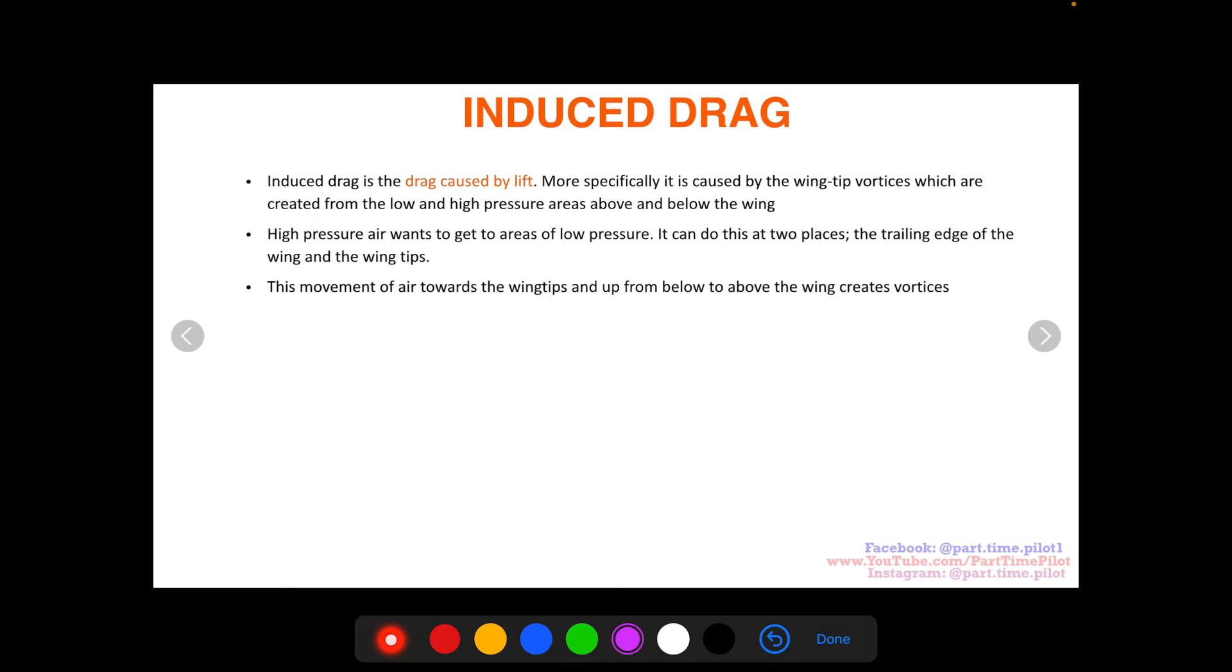This movement of air towards the wingtips, as well as up from below to above the wing—the air is moving from the leading edge to the aft edge of the wings as you fly through the air, and it's also wanting to go from below the wing to above the wing because of the pressure differential. This creates the movement of wingtip vortices as they trail the wing.